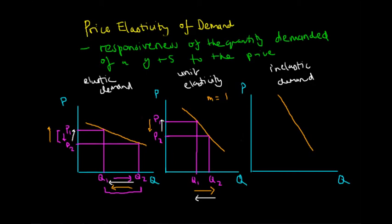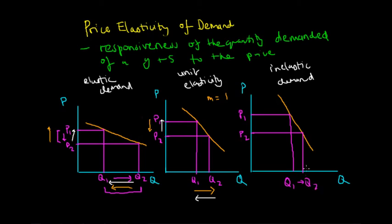Looking at the graph: if we start at P1 and the price decreases to P2, we can see the corresponding quantity demanded has not been affected as proportionally. Q1, which corresponds to P1, increases to Q2, which corresponds to P2. The change in price from P1 to P2 is much greater than the change in quantity demanded from Q1 to Q2. Reversing this, if price increased from P2 to P1, quantity demanded would decrease from Q2 to Q1.